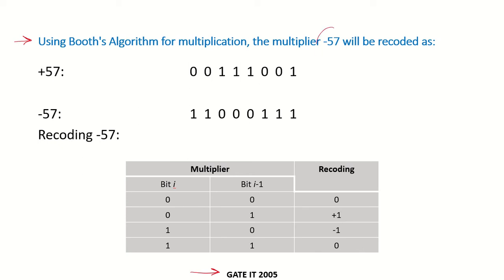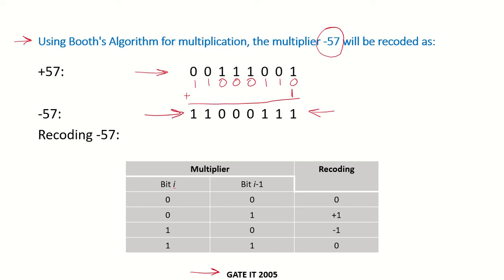First of all we have to get the 2's complement representation of minus 57. If plus 57 in binary is represented like this, we first take the 1's complement and then add 1 to get the 2's complement. So this is minus 57 in 2's complement representation, and now we have to recode this multiplier using Booth's algorithm.